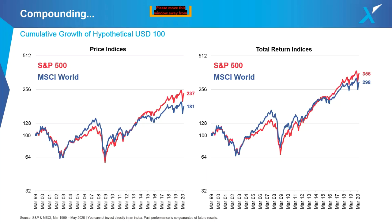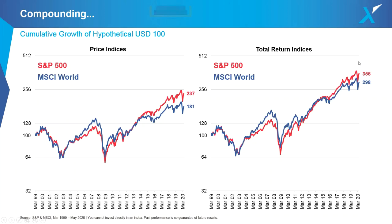I'll only consider total returns — dividends reinvested — in the subsequent slides. These are log scale charts where each grid line represents a doubling in value. It's important to show cumulative charts on a log scale because of compounding; otherwise, movements later in the chart visually appear larger than earlier ones. With a log scale, the magnitude of a move appears the same regardless of where you are in the period, which also helps to understand relative performance between different strategies through time.